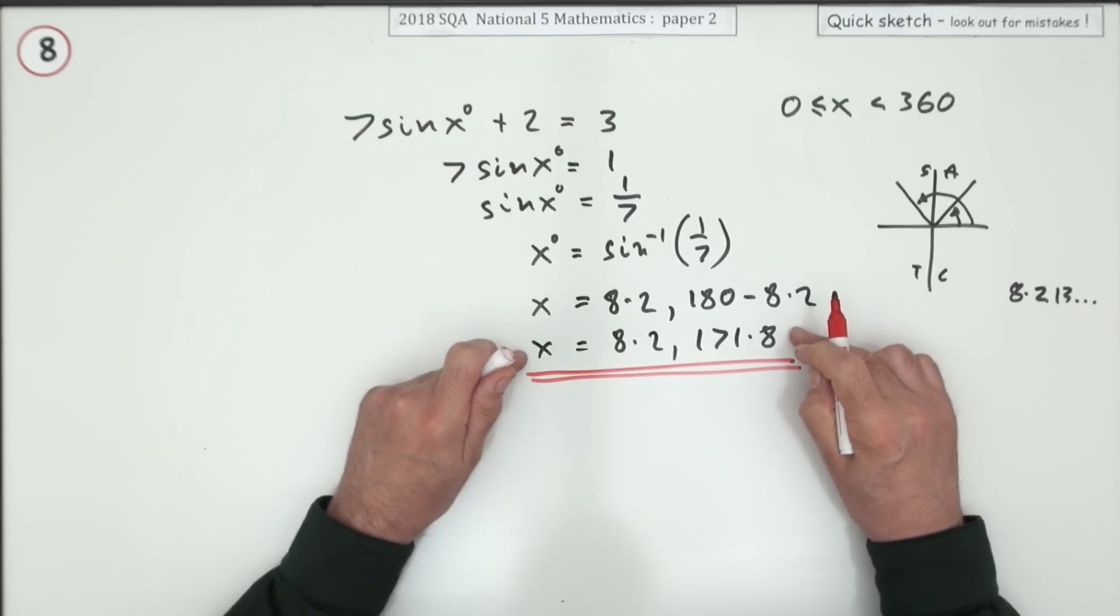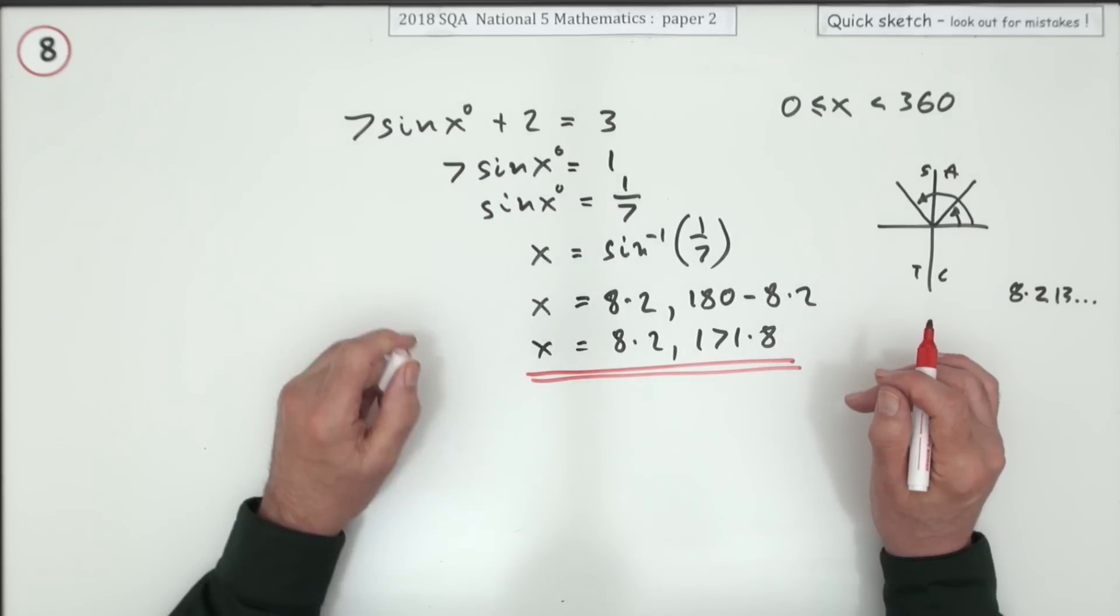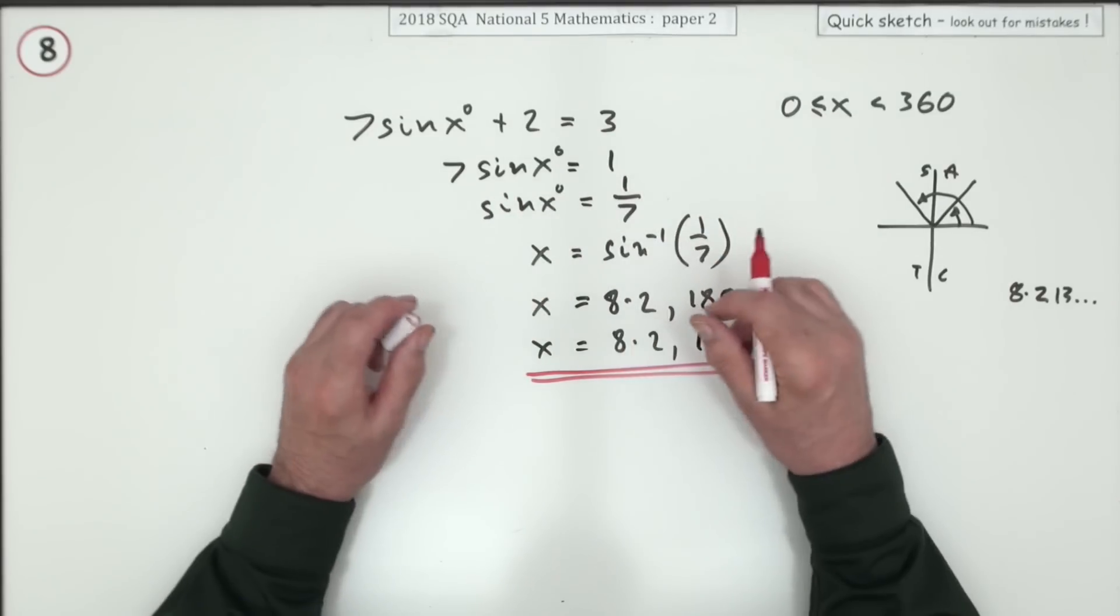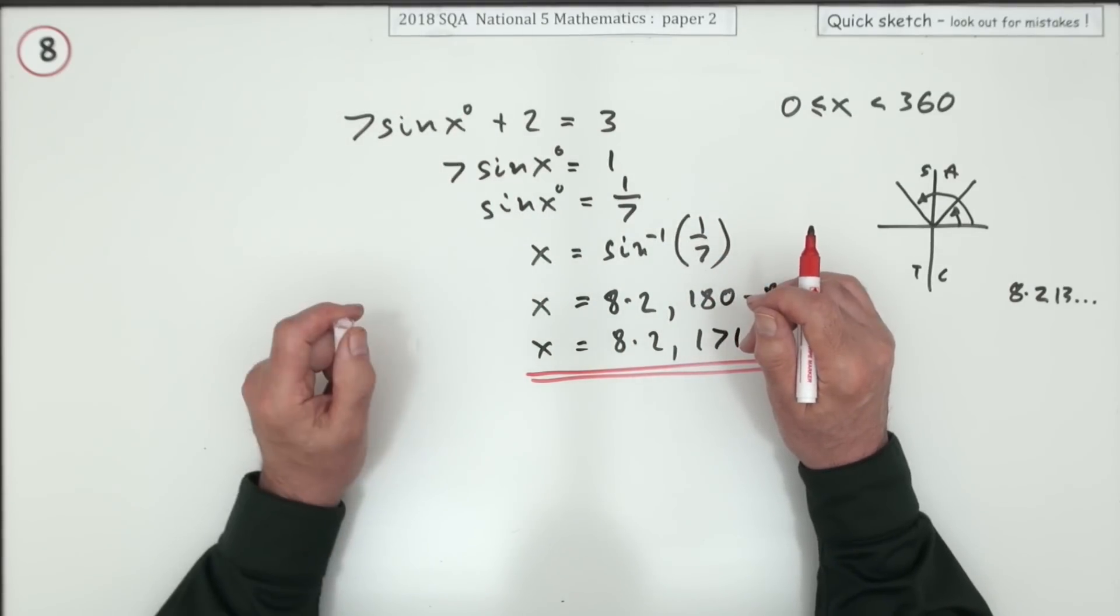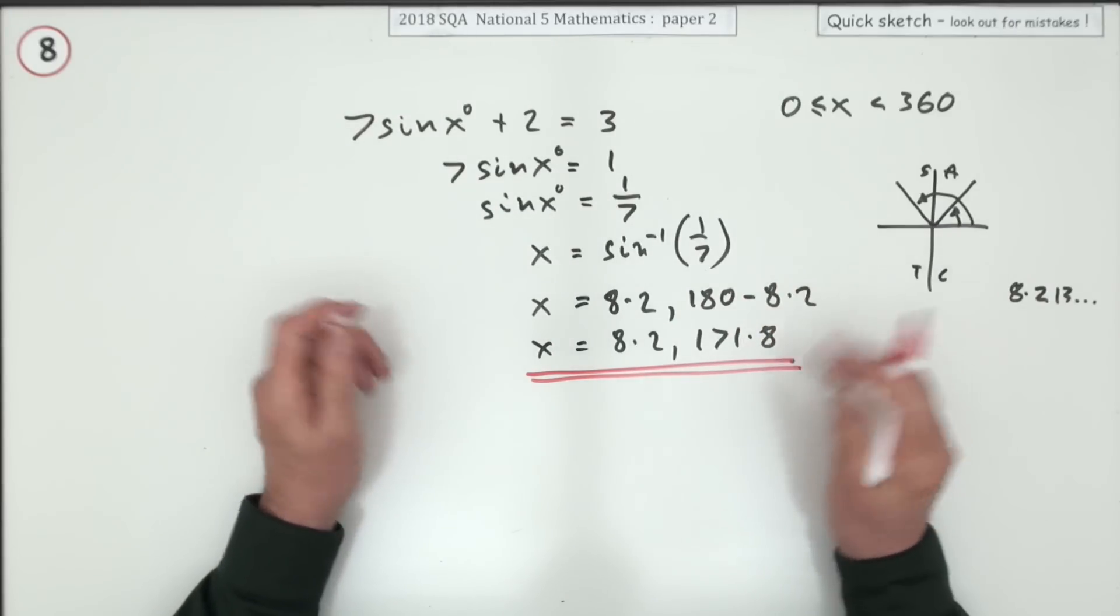Notice there's no degree signs here because x is just a number. But maybe I should have put that there as well. But they're not going to bother. Most folk don't. You'll be best putting those degree signs in the working but you can leave them out for x, and that'll be fine.